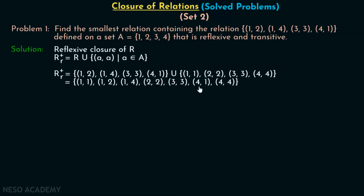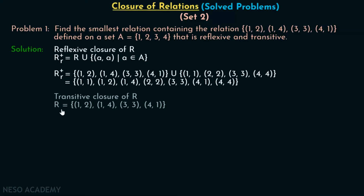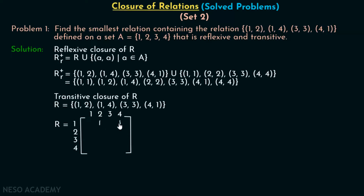After this, we find the transitive closure of this relation using Warshall's algorithm, which is quite efficient. Relation R consists of ordered pairs (1,2),(1,4),(3,3),(4,1). We represent R in matrix form, placing 1 in positions (1,2), (1,4), (3,3), and (4,1), and 0 in the rest.